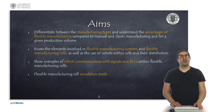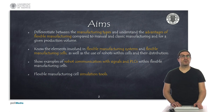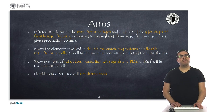The aims of the presentation are, on the one hand, to know and differentiate between different types of industrial manufacturing processes, in order to understand the advantages that flexible manufacturing offers compared to manual or classic manufacturing models for a given production volume. In addition to this, I will explain the elements involved in flexible manufacturing systems and specifically flexible manufacturing cells, as well as how robots are used within the cells and their distribution.